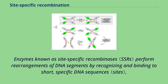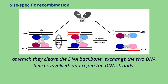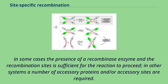Enzymes known as site-specific recombinases perform rearrangements of DNA segments by recognizing and binding to short, specific DNA sequences, at which they cleave the DNA backbone, exchange the two DNA helices involved, and rejoin the DNA strands. In some cases the presence of a recombinase enzyme in the recombination sites is sufficient for the reaction to proceed; in other systems a number of accessory proteins and/or accessory sites are required.